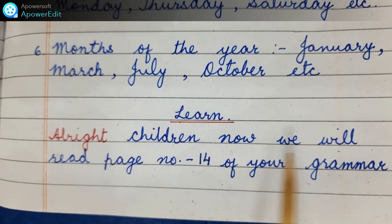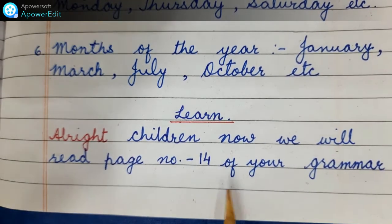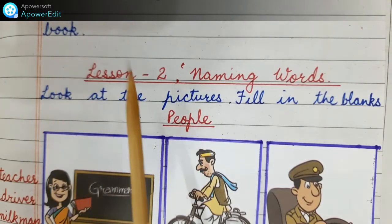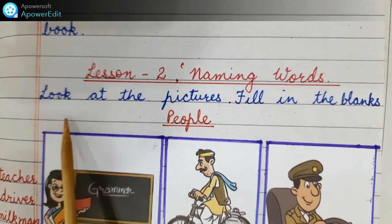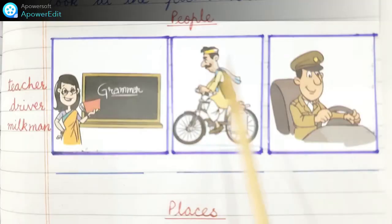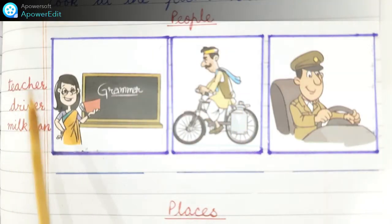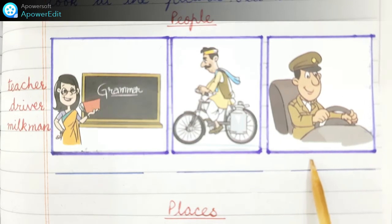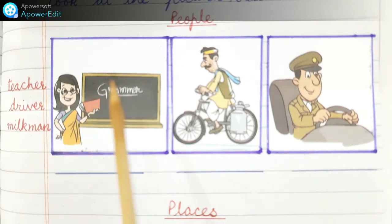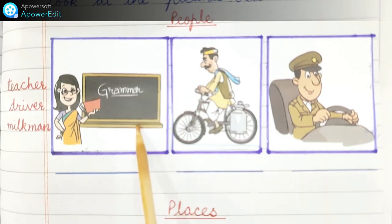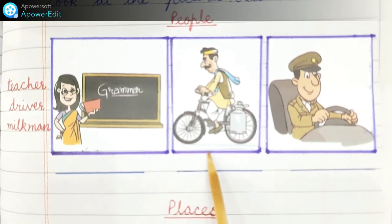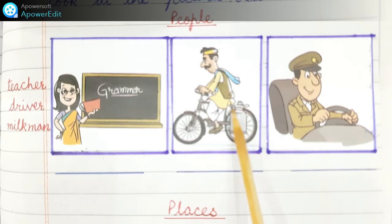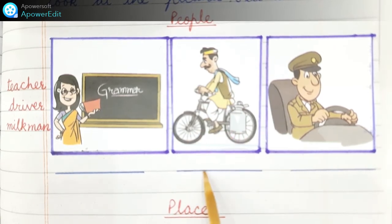Alright children, now we will read page number 14 of your grammar book. Lesson number 2: naming words. Look at the pictures. Fill in the blanks. For people, on one side it's written teacher, driver, milkman. Three pictures are shown to you. You have to choose the correct word and write under them. First is a picture of a teacher who has written grammar on the blackboard, so here we will write teacher. Second is a picture of a milkman — you can see the vessel in which milk is carried and he is on his cycle, so this is a picture of a milkman.